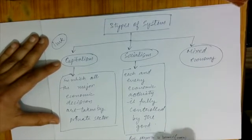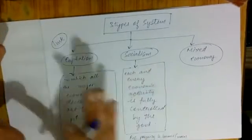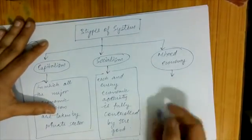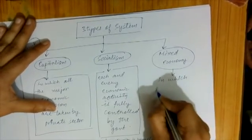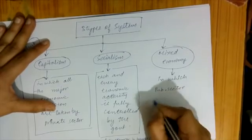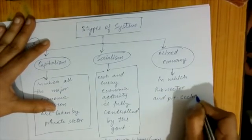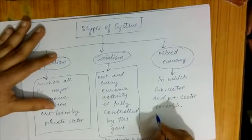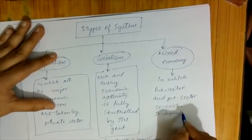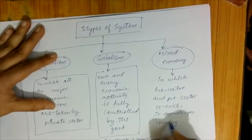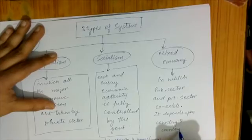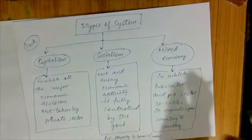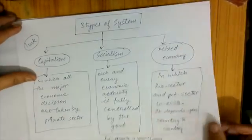Opposite to capitalism, Socialism is a situation in which each and every economic activity is fully controlled by the government. In its rigid form, private property is banned — this is Marx's system. But today, we don't see pure capitalism or pure socialism. Every country now follows a Mixed Economy, where the public sector and private sector co-exist. The ratio varies from country to country.